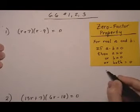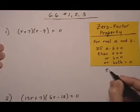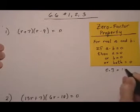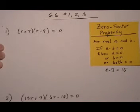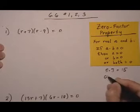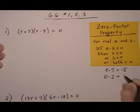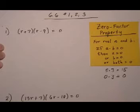And if we just look at some number examples of that, let's say we have 5 times 3, well that equals 15. If one of those was a 0, let's say we had 0 times 3, then the product is 0.